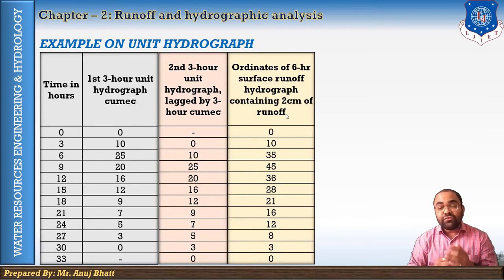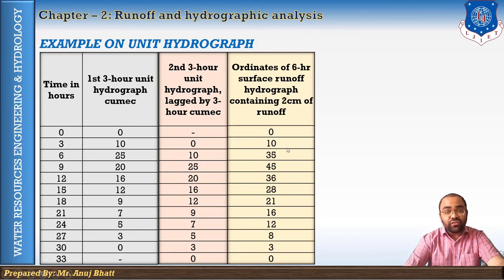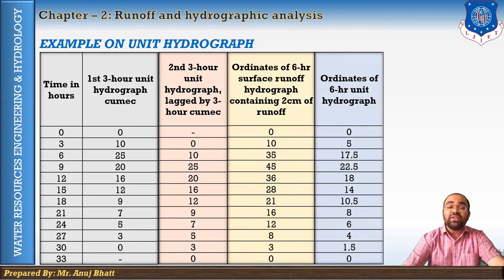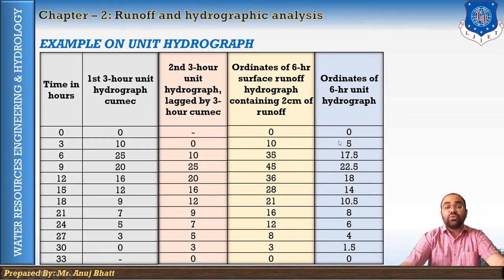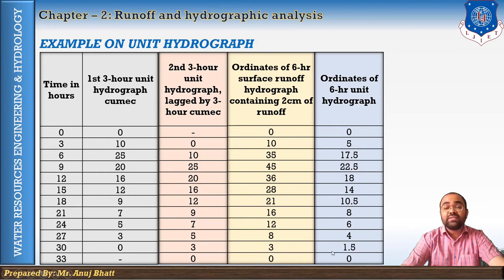Adding the two sets of ordinates: 0+0=0; 10+0=10; 25+10=35; 20+25=45, and so on, giving the six-hour surface runoff hydrograph. To find the six-hour unit hydrograph ordinates, we divide by the runoff value of 2 cm: 0/2=0; 10/2=5; 35/2=17.5; 45/2=22.5, continuing this procedure to the end to obtain all six-hour unit hydrograph ordinates.